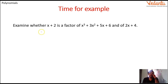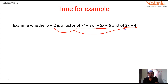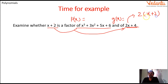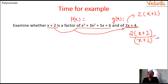Say for example we have to examine whether x + 2 is a factor of two given polynomials. There are two dividends. I am assuming the first as p(x) and the second as g(x). For g(x) = 2x + 4, you can just take 2 as common, giving 2(x + 2). So 2(x + 2) divided by (x + 2) gives 2, and both x + 2 cancel, so it is divisible.